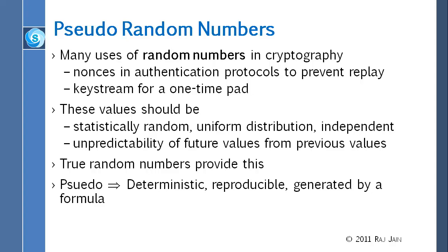True random numbers provide unpredictability, but pseudo-random numbers don't — they are deterministic, reproducible, and generated by a formula. Pseudo-random numbers are generated by a formula, and using that formula, anyone can generate the same sequence at any time, so they are very predictable. For simulations we like those numbers, because we want to run the simulation again and again and get the same result. But for cryptography we don't want that kind of reproducibility.